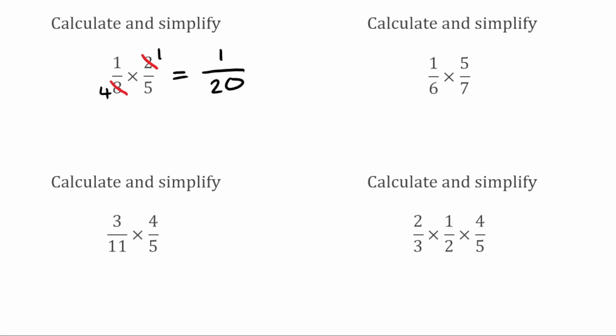Now we've got 1 over 6 multiplied by 5 over 7. Again, checking to see if we can cross-cancel any of the numbers. We've got 1 and 7 — highest common factor is 1, so we can't do anything there. Then the other way, we've got 6 and 5 — again highest common factor is 1, so we can't cancel these down. So we're just going to multiply it through. We've got 1 multiplied by 5 which is 5, and 6 multiplied by 7 which is 42. So our answer to that one would be 5 over 42.